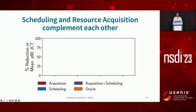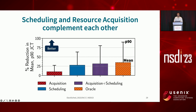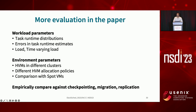We also evaluate additional benefits from our resource acquisition component, showing reduction in mean and 90th percentile job completion time compared to the capacity scheduler. The red bar shows benefits solely from the acquisition component, since we're maintaining more stable harvest VMs in the pool. The blue bar shows benefits solely from the scheduling component. The purple bar shows that benefits from these two components add up, because now the scheduler has more choices to place the longer tasks. These benefits are very close to the Oracle scheduler. In our paper, we evaluate various other aspects including sensitivity to different workload and environment parameters, and empirically compare against checkpointing and replication techniques.